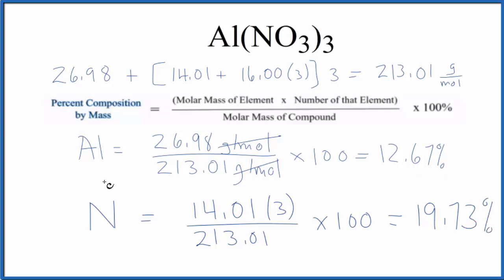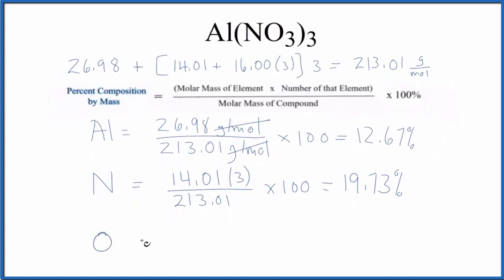Let's do the oxygen. For oxygen on the periodic table, 16.00 grams per mole. We have 3 times 3, so we have 9 oxygen atoms. Again, we divide by the molar mass for the compound, multiply by 100, and we get 67.60%.